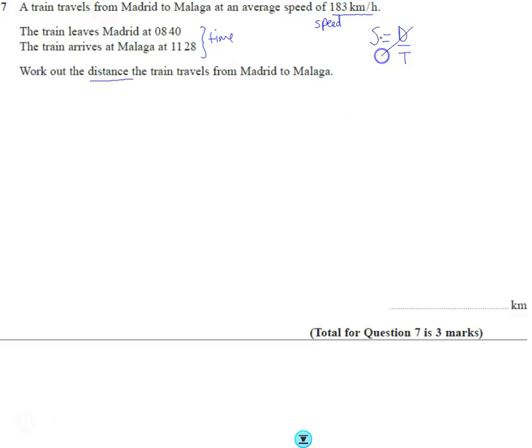So we don't want this form, we want the other form round. We want the distance is equal to the speed times the time. Okay, so we've just got to be aware that our speed is in kilometres per hour.